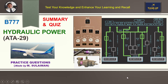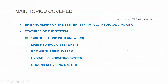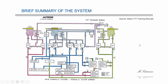Hello everyone, I'm Mohamed Salaman, aircraft engineering instructor, and welcome to my new video about hydraulic power ATA 29 of Boeing 777. Today we will discuss the following various topics: a brief summary of the system, features of the systems, and then a quiz comprising 30 questions with answers. The topics will be the main hydraulic systems, the ram air turbine system, hydraulic indicating system, and ground servicing system.